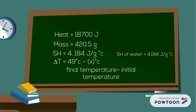and our specific heat of water is 4.184 joules over grams degree Celsius. Our delta T is our final temperature minus our initial temperature.